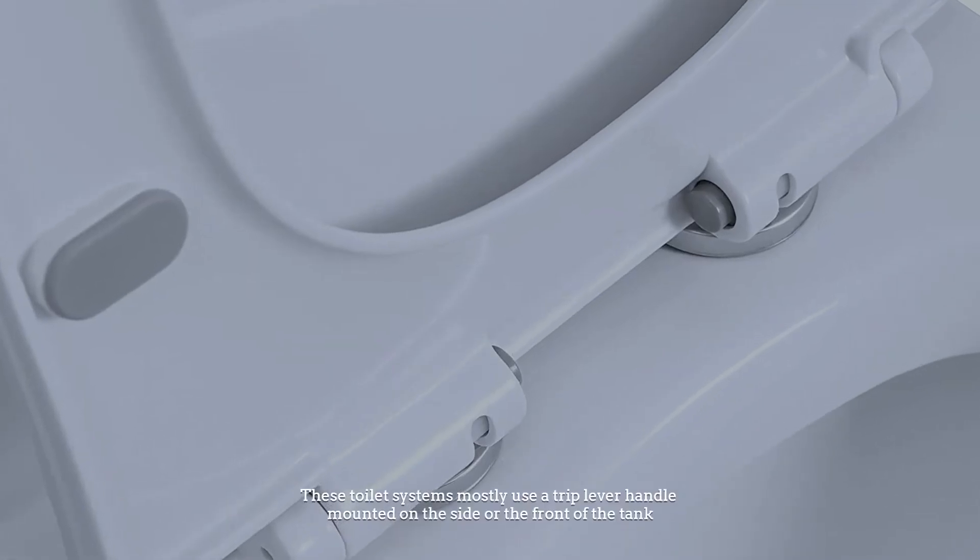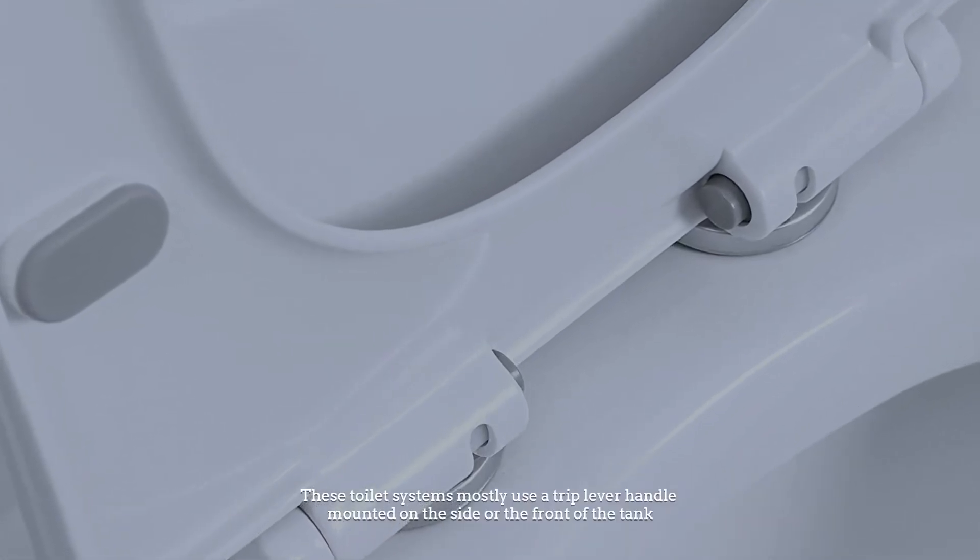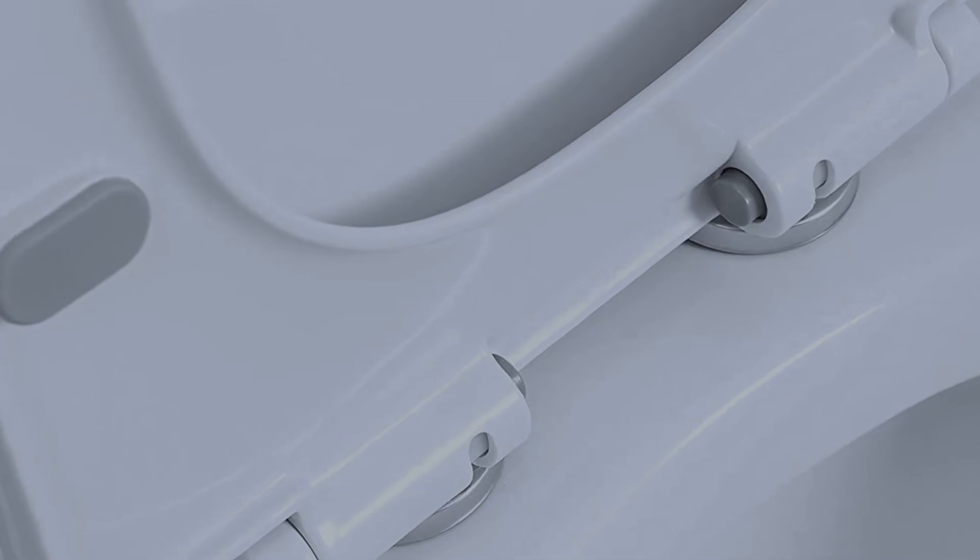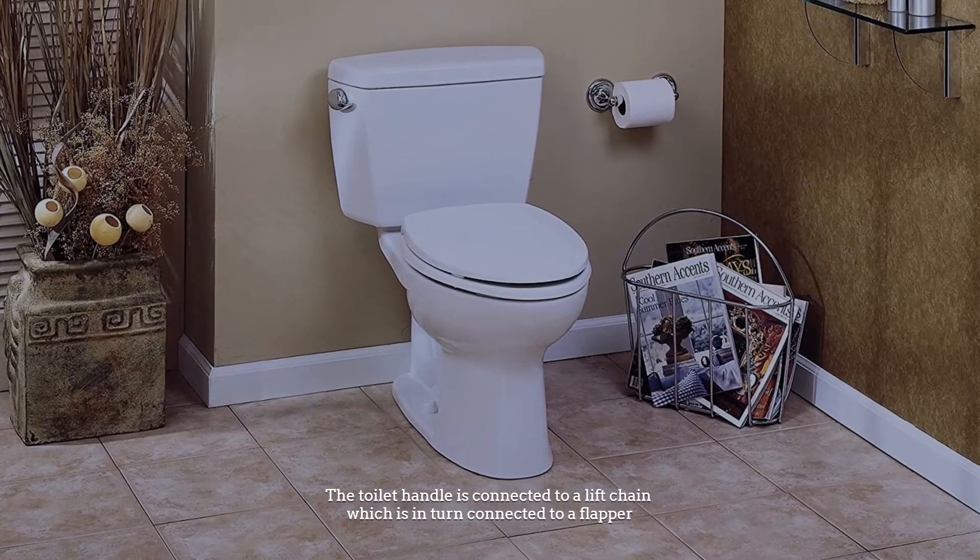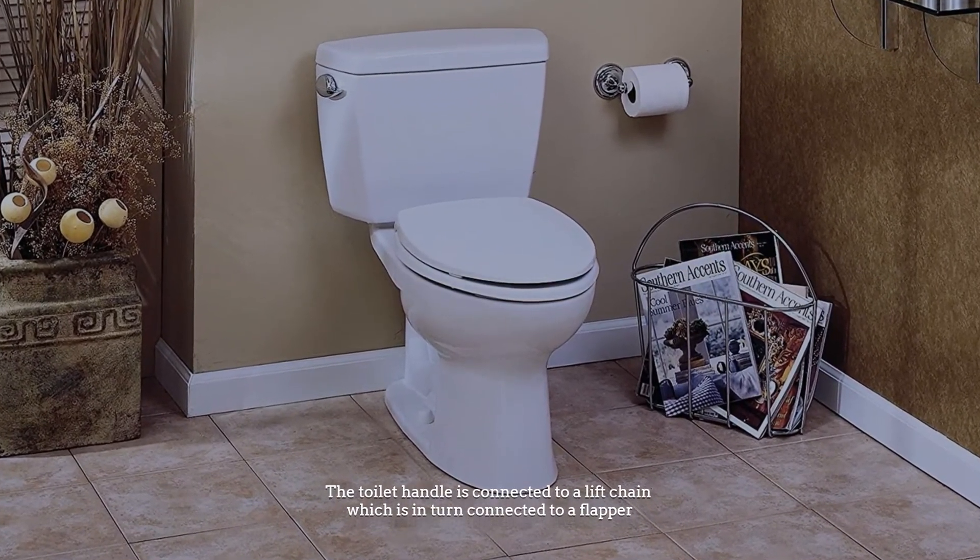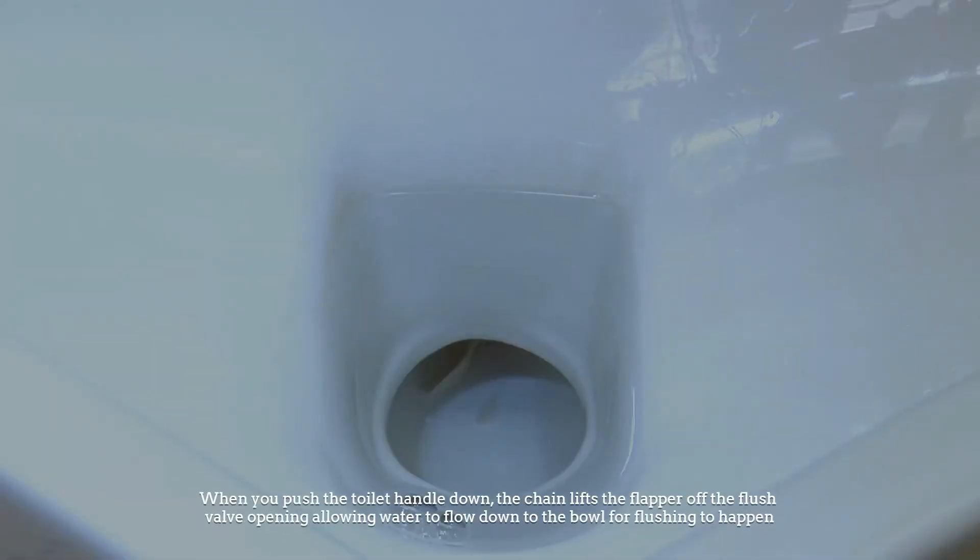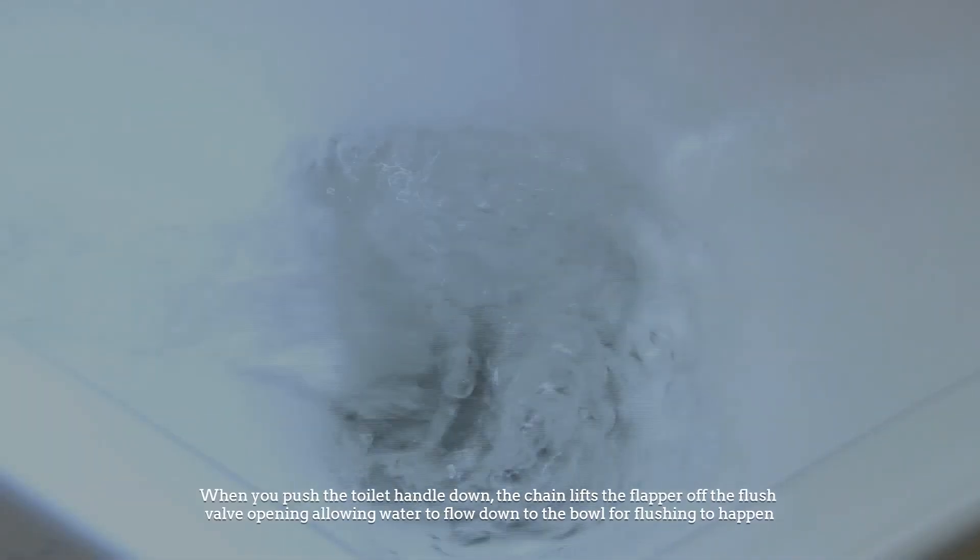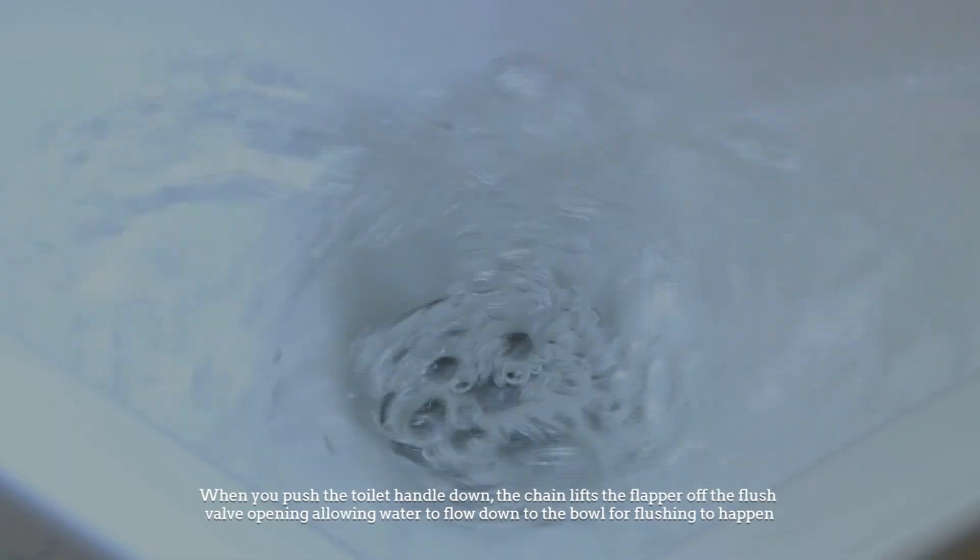These toilet systems mostly use a trip lever handle mounted on the side or front of the tank. The toilet handle is connected to a lift chain, which is in turn connected to a flapper. When you push the toilet handle down, the chain lifts the flapper off the flush valve opening, allowing water to flow down to the bowl for flushing to happen.